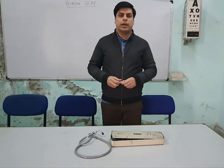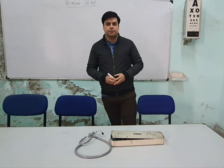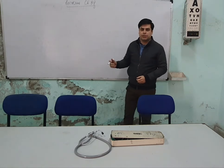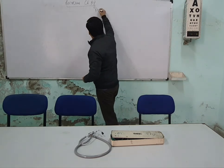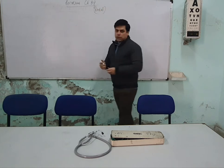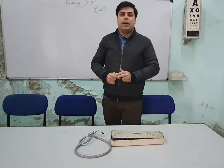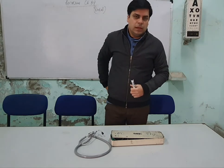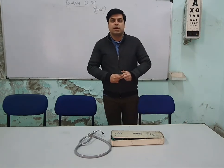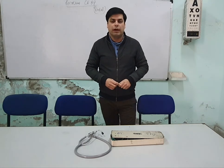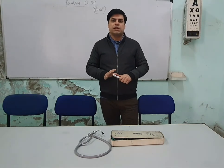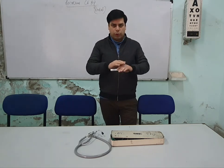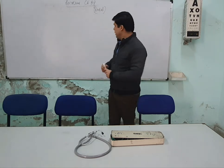Good morning everyone. Today's topic is recording of blood pressure. Blood pressure will be recorded in the radial artery as arterial blood pressure. We will understand the examination and recording of arterial blood pressure. Blood pressure is defined as the lateral pressure exerted by a moving column of blood on the vessel wall while flowing through it.